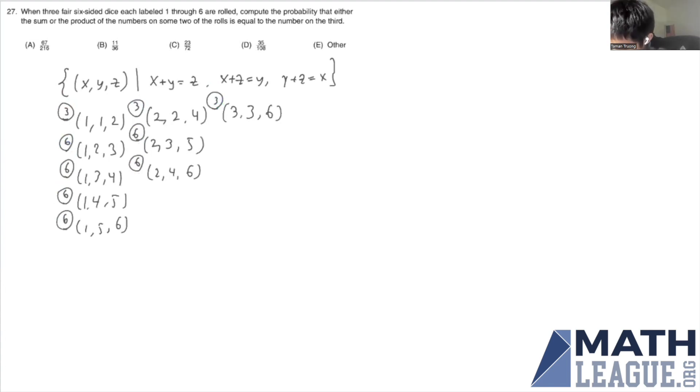This will give us 1, 2, 3, 4, 5, 6 counts of six orderings plus three counts of three orderings. That gives us 36 plus 9 is 45 for this first case, right?